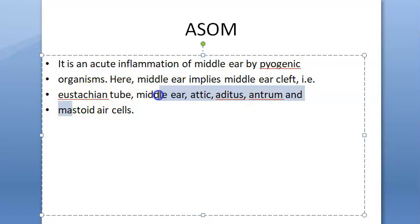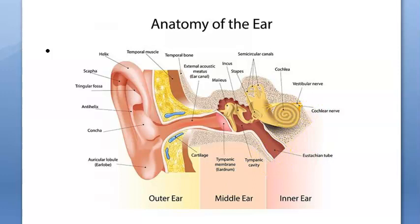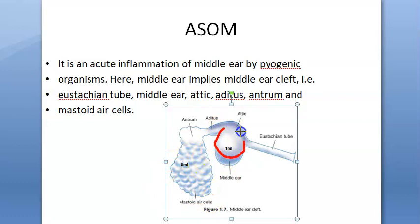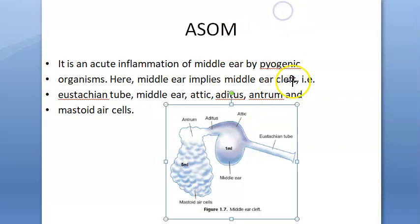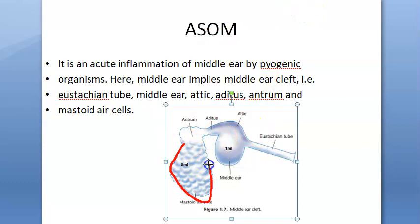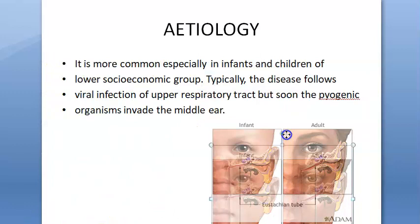When we say 'middle ear' in the context of ASOM, we mean the entire middle ear cleft: the Eustachian tube, the middle ear itself, the attic, the aditus, the antrum, and the mastoid air cells. All these structures can be involved. If the mastoid is involved specifically, that is called mastoiditis.